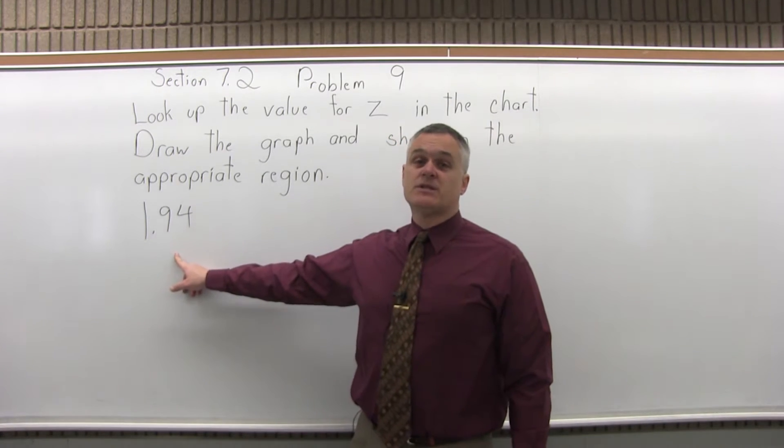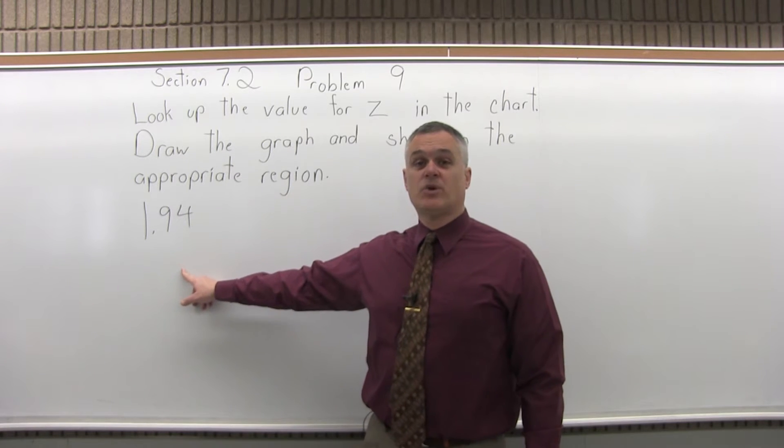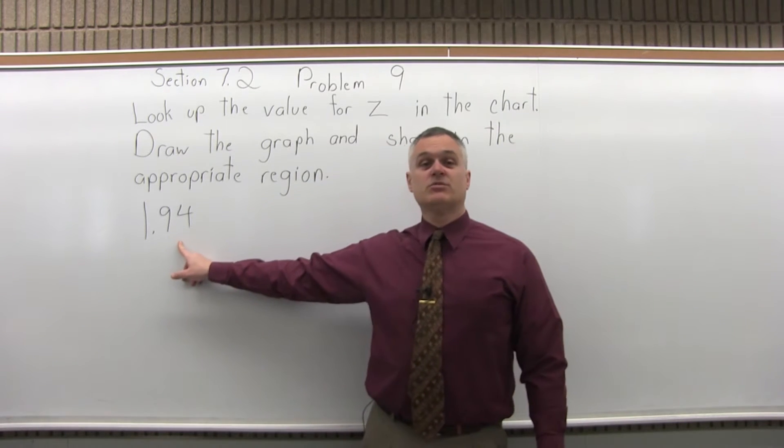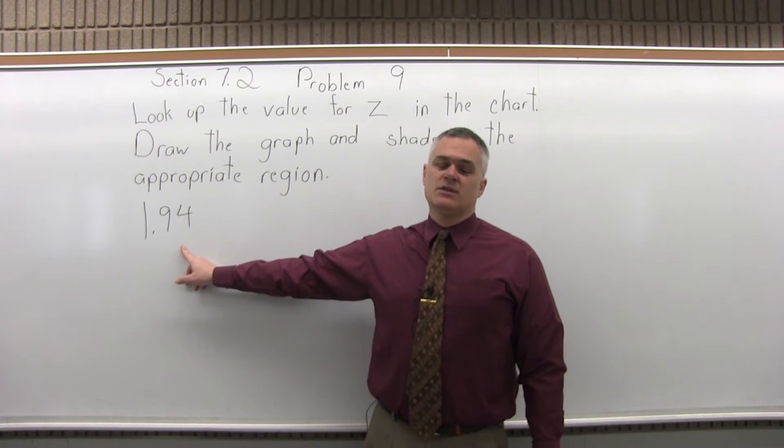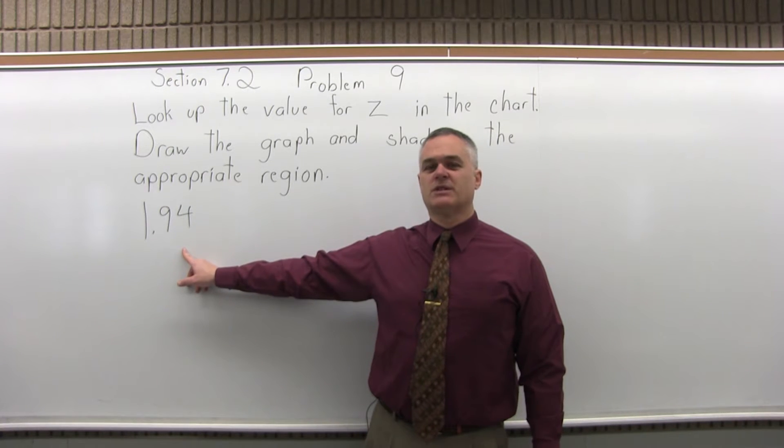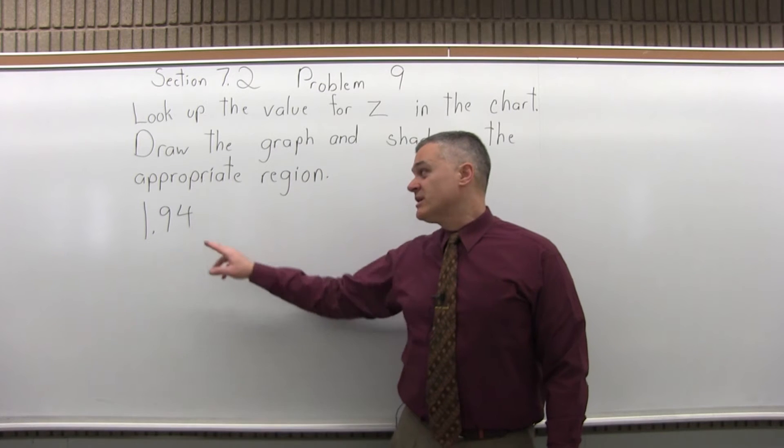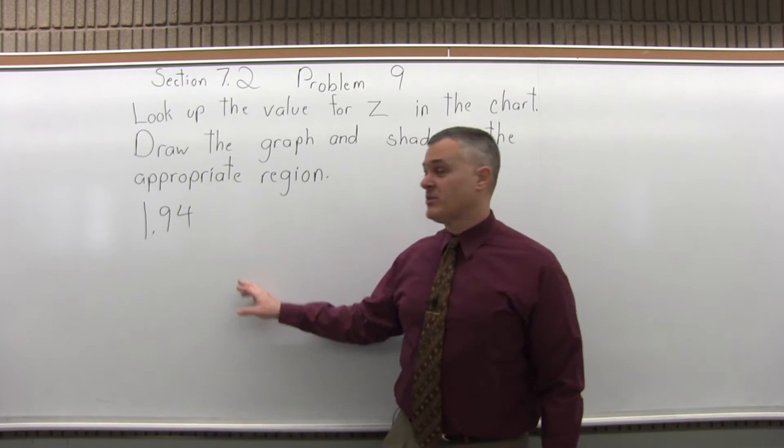So there's a four step process to look up any number in the chart. Step one is write the number to look up so that it has two places after the decimal. This one already has two places after the decimal so step one is all set. Step two, split the number into two parts by pulling off the rightmost digit.